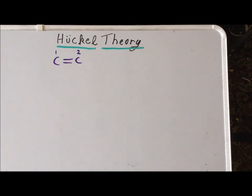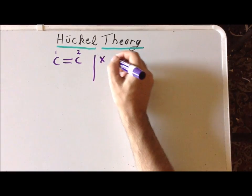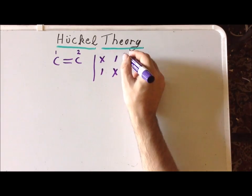Now, using our substitution, we get that we have the determinant with X, 1, 1, X equal to 0.